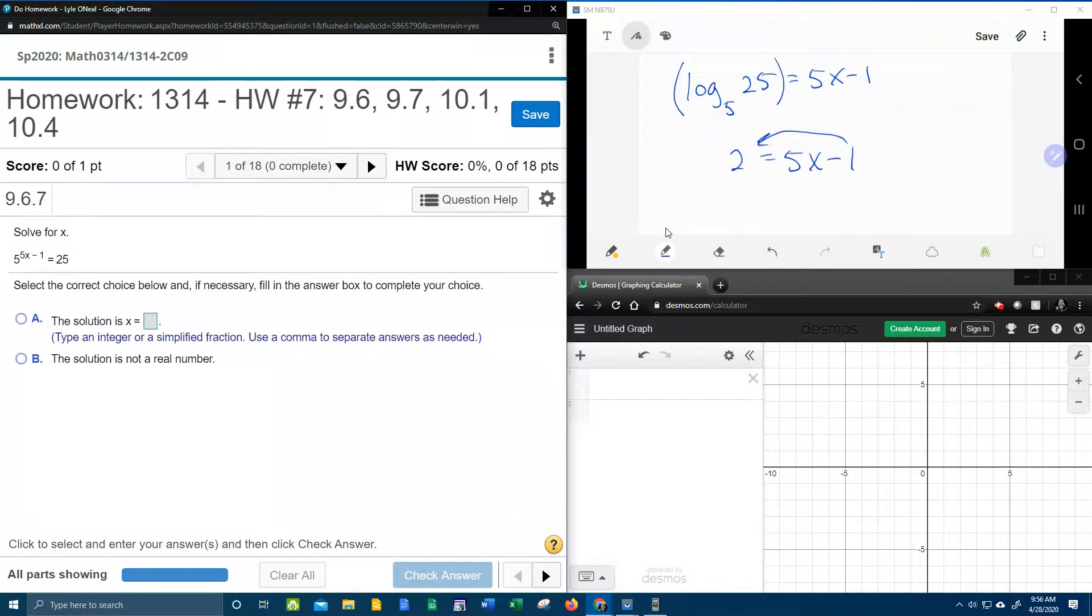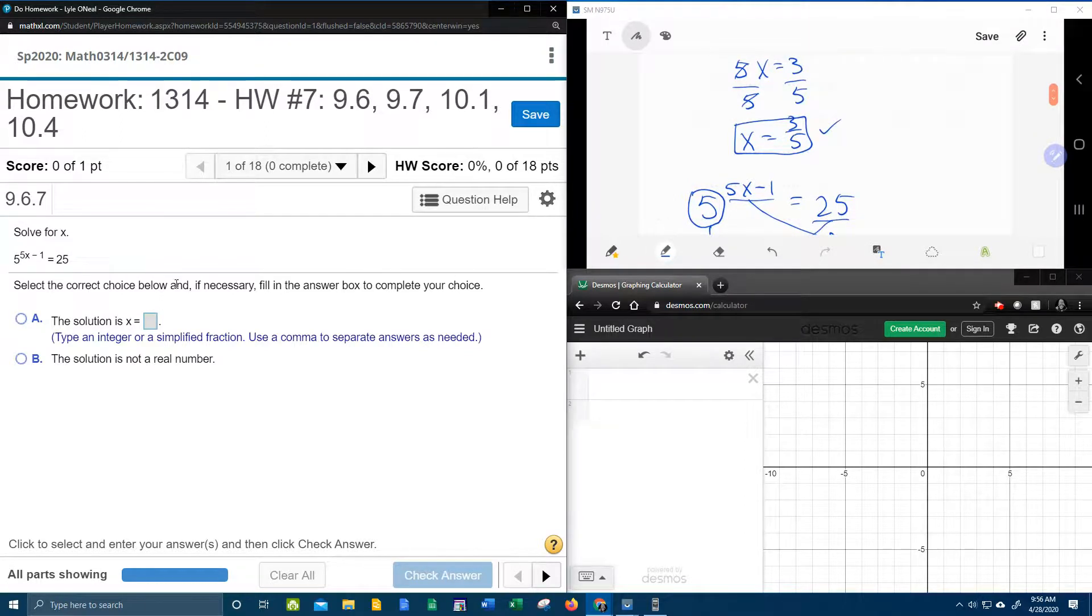Bringing the 1 over makes it positive. 2 plus 1 is 3. And divide both sides by 5. So there are two techniques that can be used to solve an exponential equation.